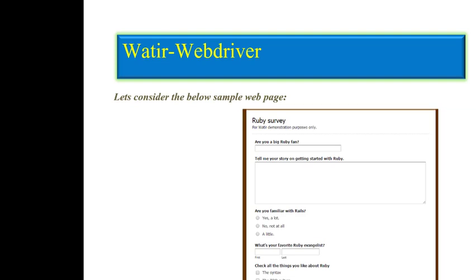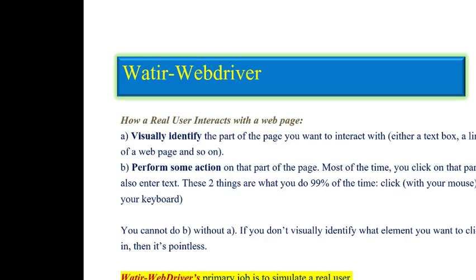Those are certain methods available in the driver object. The two primary actions you're going to be using are click and set. So you have a browser, and within it an HTML element — whether it's a text box or something else. You can say browser.text, then specify the ID — the specific attribute — and do some action, like dot set with whatever value you want to specify.